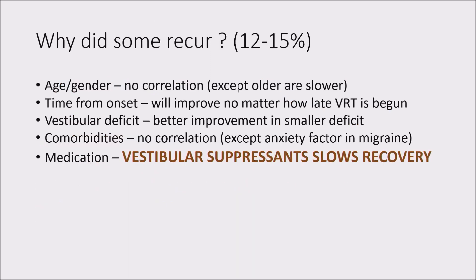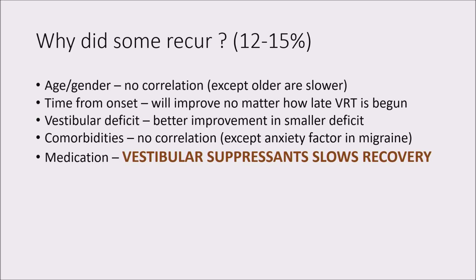Why did some patients recur? Twelve to fifteen percent of recurrences were noted in the same study. They looked at age and gender — not causal; an older person walks slower but can still recover completely. Time from onset did not make a difference; the vestibular deficit did not. What made a difference was giving vestibular suppressants — VRT cannot act effectively when suppressants are given, because VRT requires the vestibular system to be stressed for central compensation to occur.